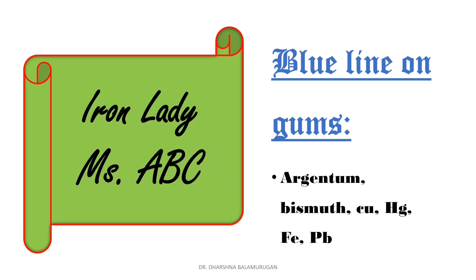To remember these, use the mnemonic 'Iron Lady Miss ABC': Iron = iron, Lady = lead (plumbum), Miss = mercury, A = argentum, B = bismuth, C = copper. So iron, lead, mercury, argentum, bismuth, and copper all produce a blue line on the gums.